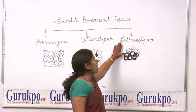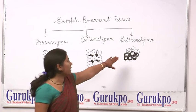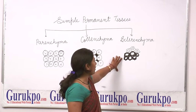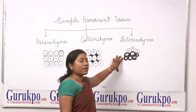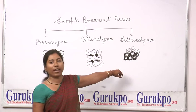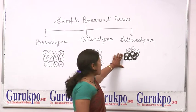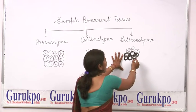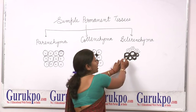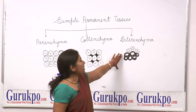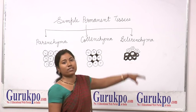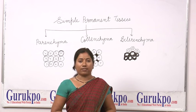Next is Sclerenchyma tissue. Sclerenchyma tissue is made up of dead cells having lignin deposition. Sometimes there is cellulosic deposition also present, as in cotton and flax. The cell wall of sclerenchyma tissue has pits on its walls. It is present in older parts of the plant and gives mechanical strength to the plant. Thank you.